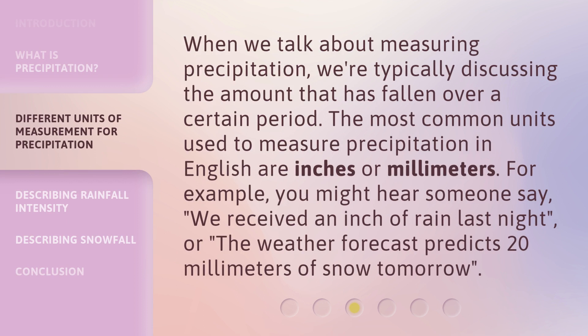When we talk about measuring precipitation, we're typically discussing the amount that has fallen over a certain period. The most common units used to measure precipitation in English are inches or millimeters. For example, you might hear someone say, "We received an inch of rain last night," or, "The weather forecast predicts 20 millimeters of snow tomorrow."